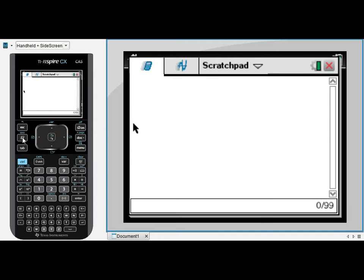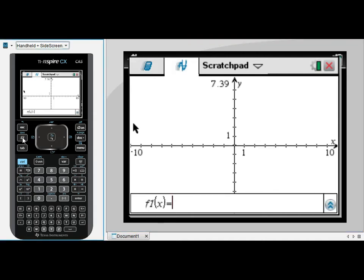I'm going to press that and it will open up the scratchpad. If the scratchpad opens in calculator mode, that's because that's the last place you were in the scratchpad. Press it again, the same button, to toggle across to the graphing screen.